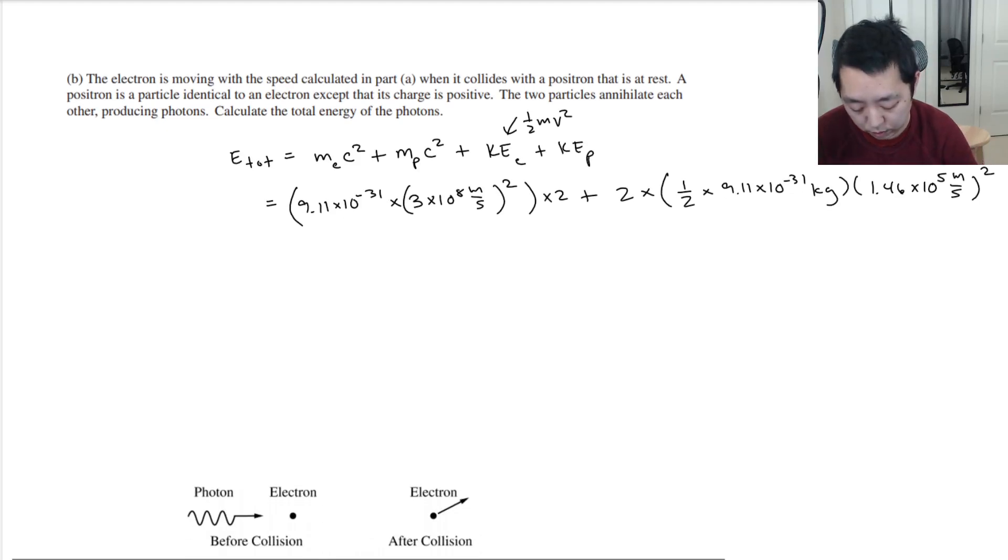So 9.11 E minus 31 times 3 E eight squared times two. I got the energy was 1.64 times 10 to the minus 13 joules.